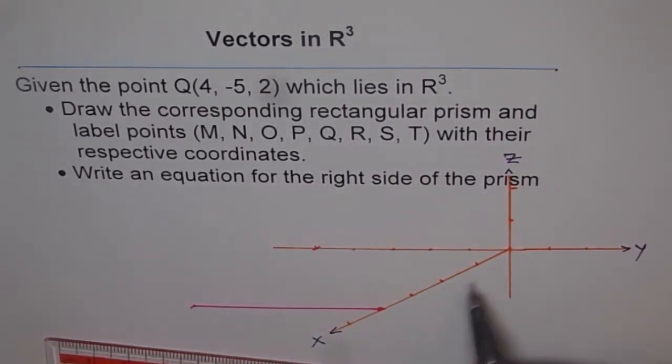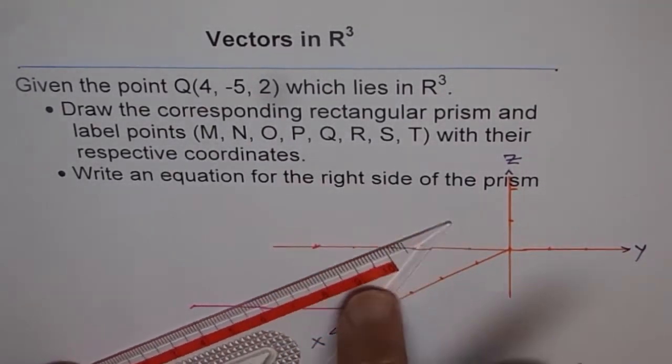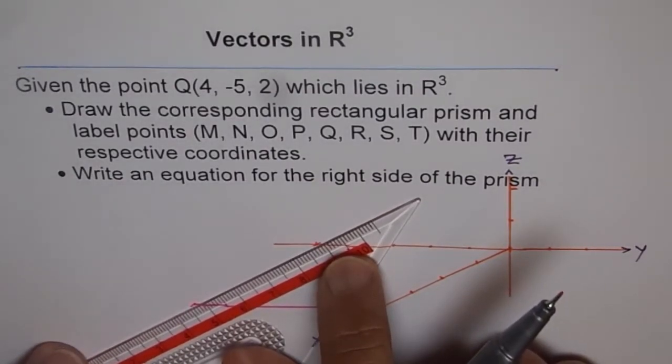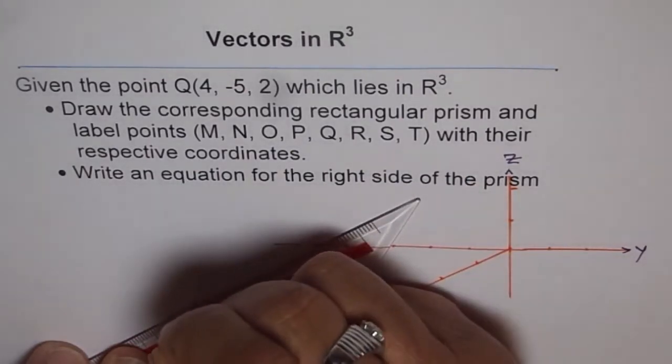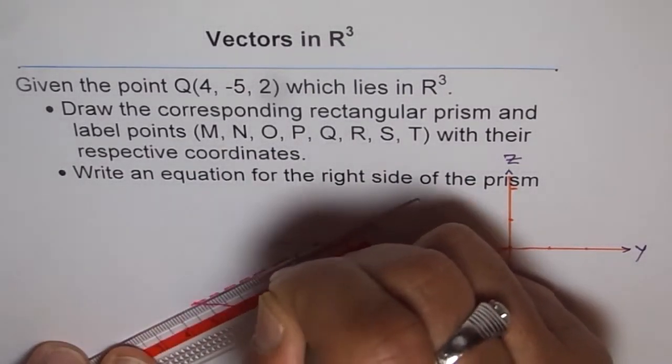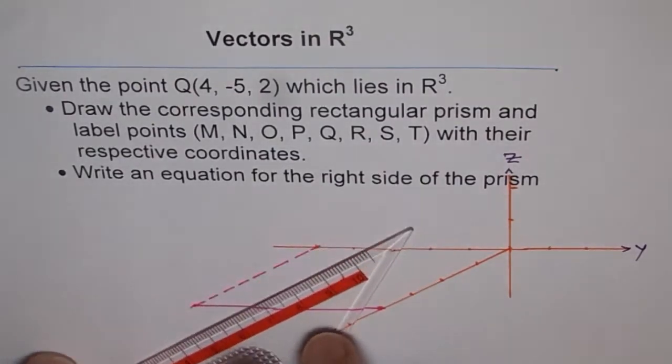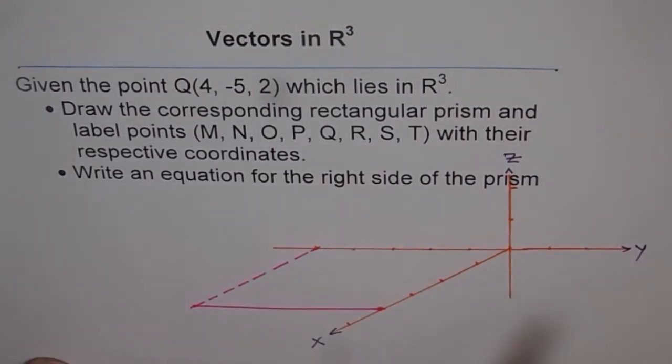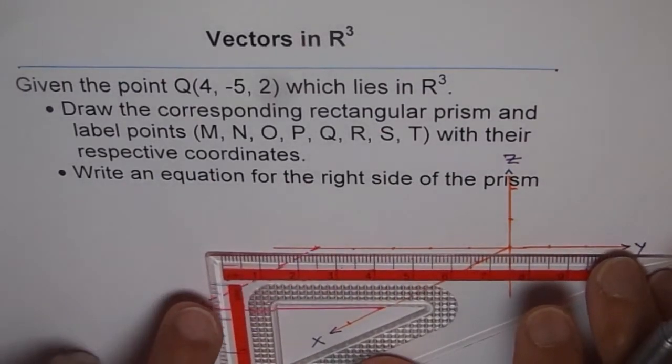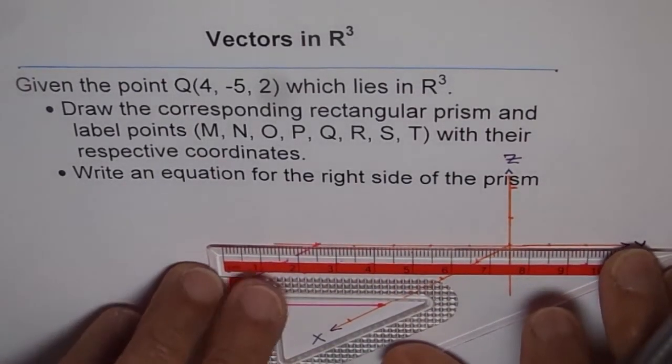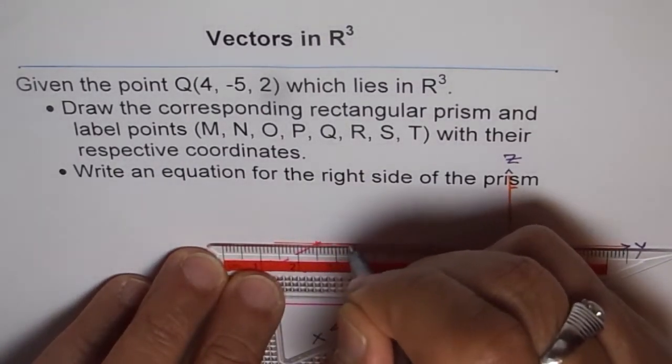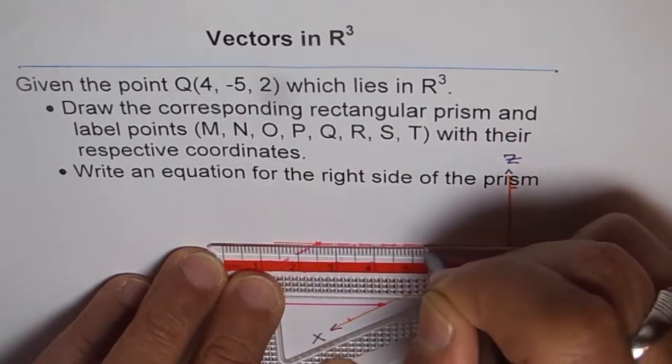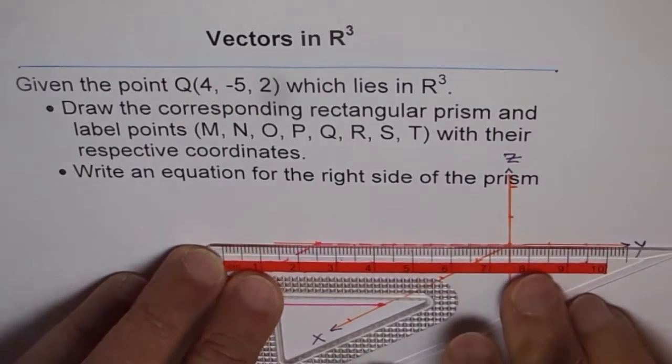So minus 5 is along y, but in the negative direction. So we will go parallel to the y-axis, but towards the negative side. So that means 1, 2, 3, 4, 5. So we are here. So we draw this line. So this is our second point. So 1, 2, 3, 4, 5, corresponding to this. So we have got the x, y, and we have to move two units up. But before moving two units up, it's a good idea to complete the base.